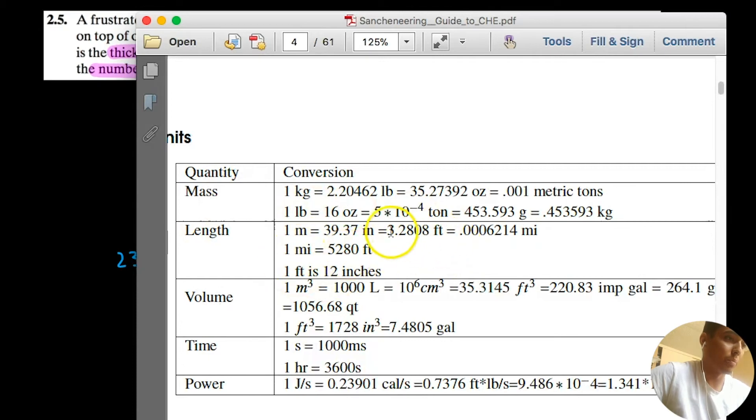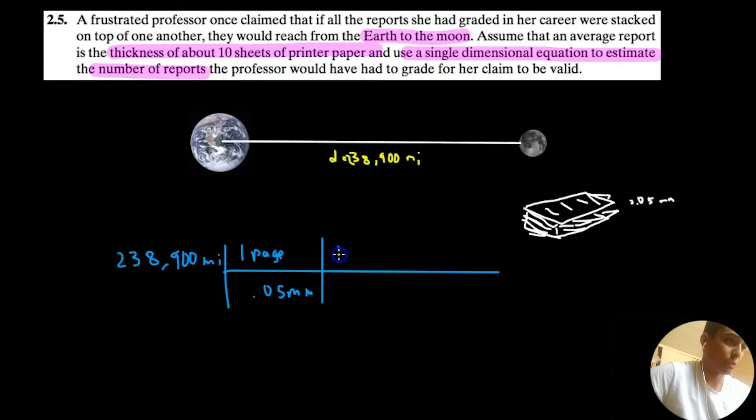Pull up this unit conversion table. So 1 meter is 0.00062 miles, and 1 meter is 1,000 millimeters. So we should be able to cancel out miles, millimeters, and meters. Cool! So we're left with pages.